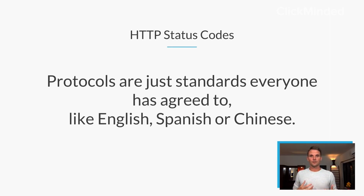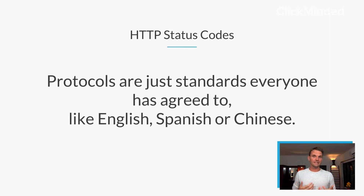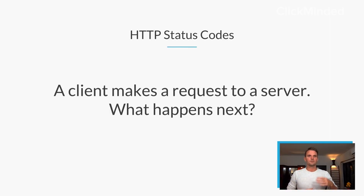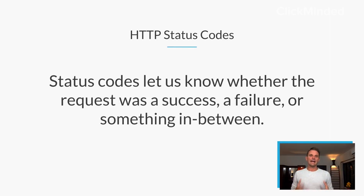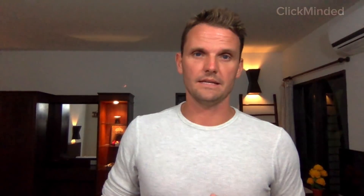You make this request using what we call the HTTP protocol. Protocols are really just standards that everyone on the internet has agreed to — it's no different than English, or Spanish, or Chinese. It's a language that we've all agreed to. When a client makes a request to the server, status codes let us know whether the request was a success, a failure, or something in between. That's what an HTTP status code is.